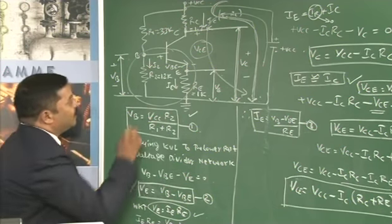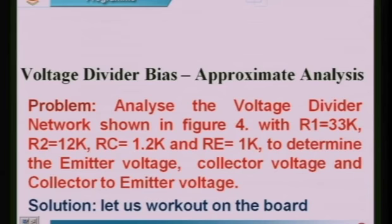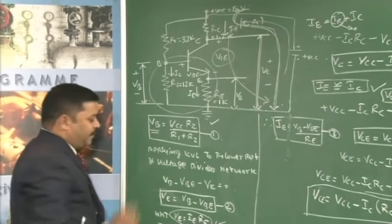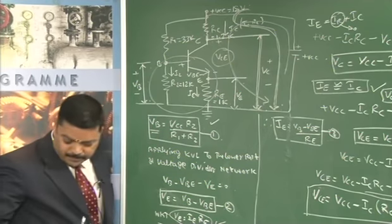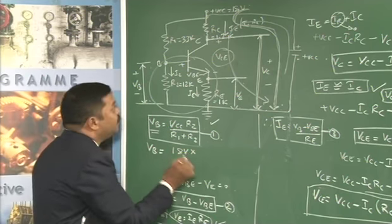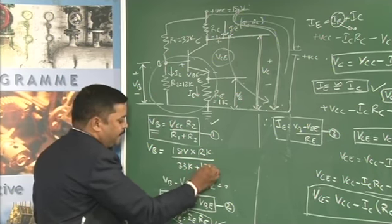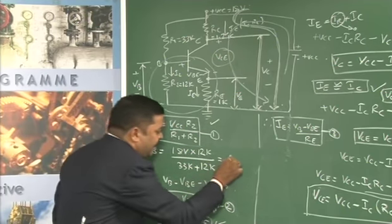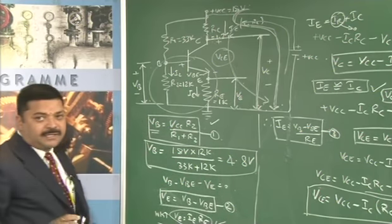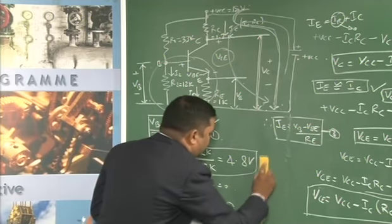Using equation 1, VB = VCC × R2 / (R1 + R2) = 18 × 12k / (33k + 12k) = 4.8 V. This type of problem is very important in exams, as there will definitely be a problem on voltage divider biasing or fixed bias for 8 to 10 marks.